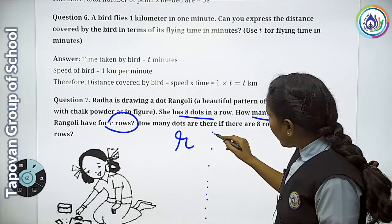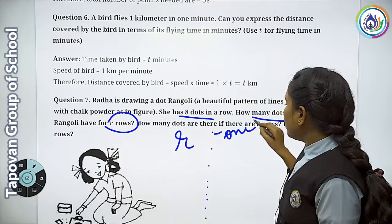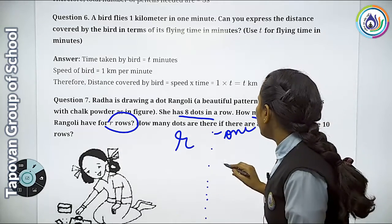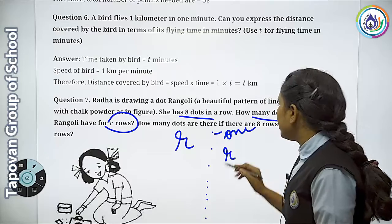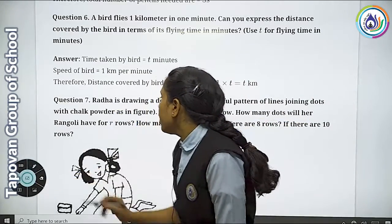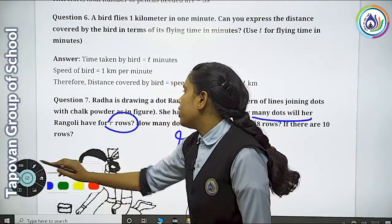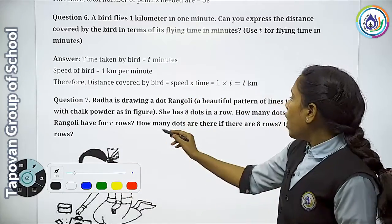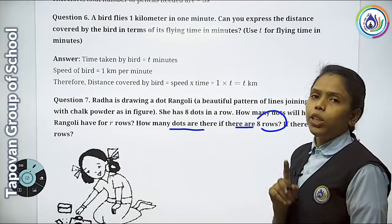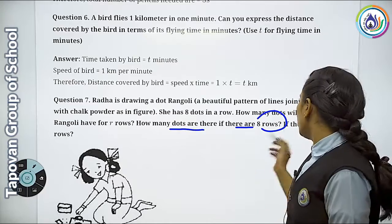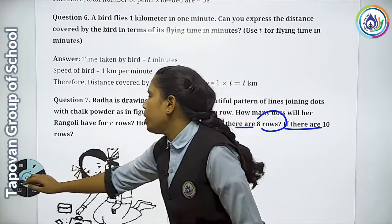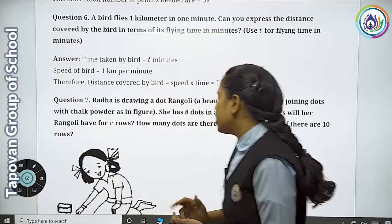So these are 8 dots in 1 line. How many such dot lines will she make — we call that R rows. There is a second question also in this: how many dots are there if there are 8 rows? If there are 8 rows, how many total dots? And if there are 10 rows, how many? We need to find both.